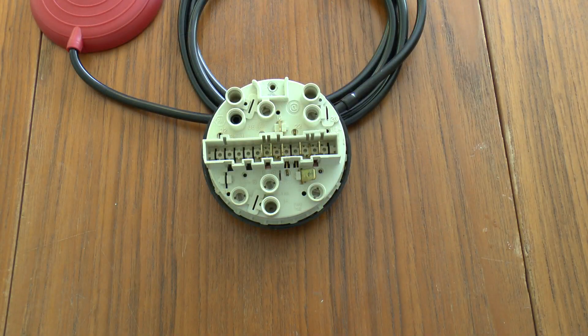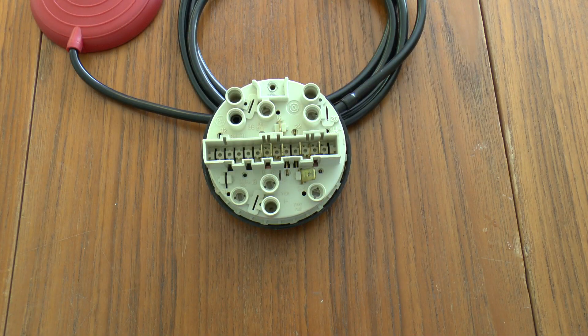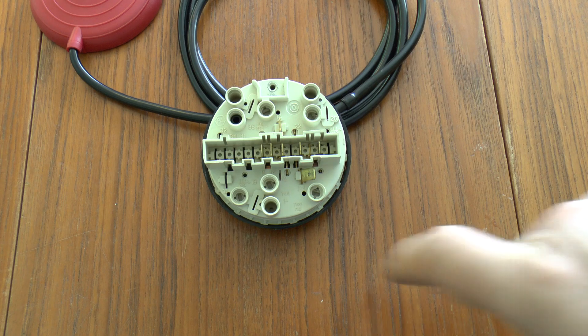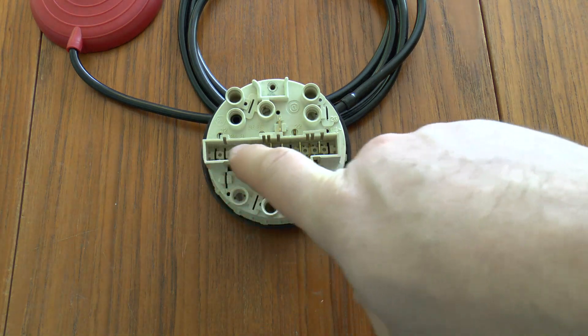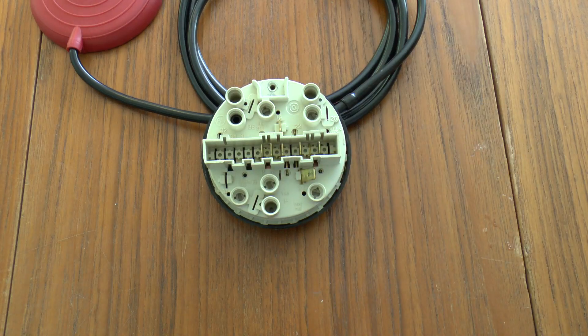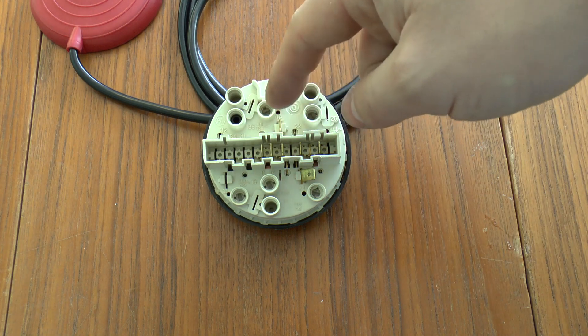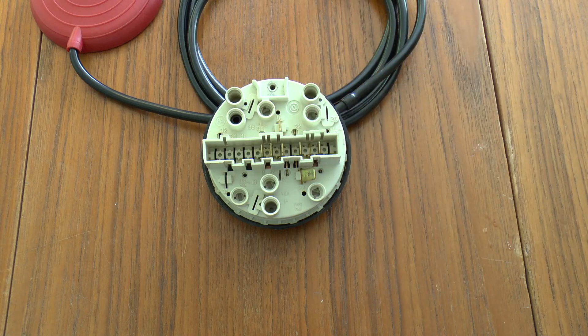This is Hoover part number 91213504 and these are the connections you can see on the back. There are in fact provisions for a third contact in there, but it's not actually in place in this one. So these are the connections and this is how they're wired.